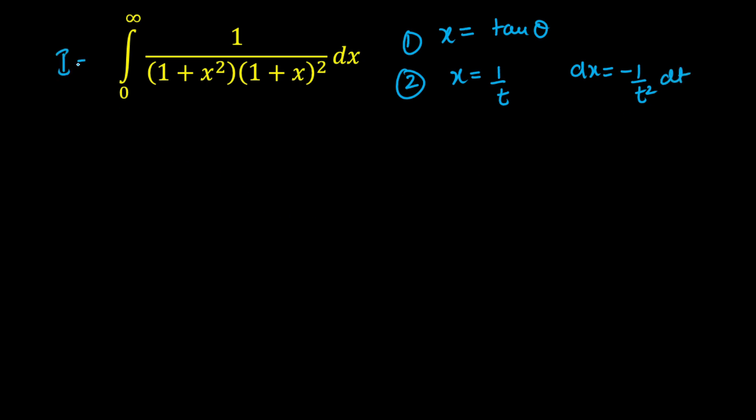Now let us say this is equal to i and let us substitute here x equals 1 by t. We will get i equals limit infinity to 0. We will get here 1 upon we will get this as 1 plus 1 by t square, whole multiplied by 1 plus 1 by t whole square. And here you will get minus 1 upon t square into dt here.